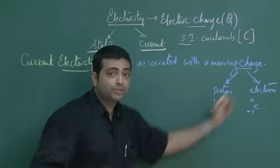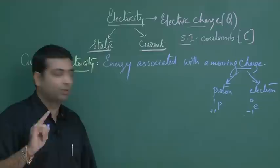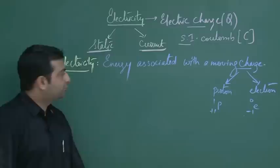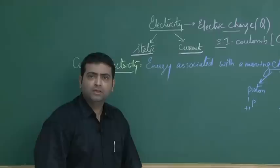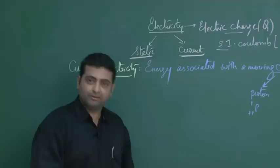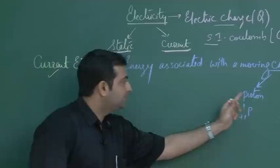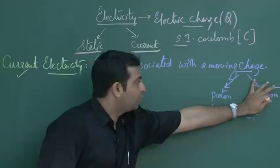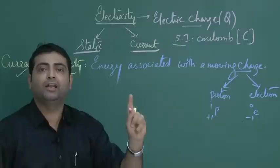When I speak about energy associated with a moving charge, we are speaking about motion of any of those charges — whether proton or electron. The term current electricity was invented long before. It was initially put forward by Ampere and Volta. During those days, electrons were not at all discovered, so they considered the flow of positive charge — protons — to be a flow of electric current.